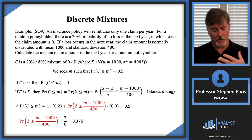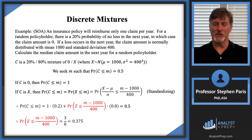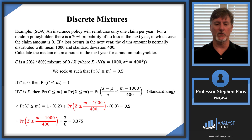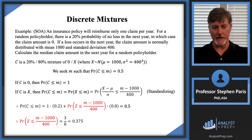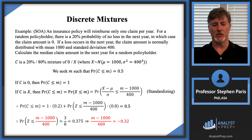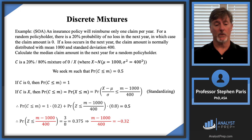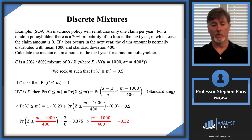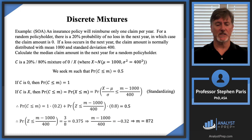The 37.5th percentile of the standard normal distribution is approximately −0.32. So (M − 1000)/400 ≈ −0.32. Solving for M gives M ≈ 872 as the answer.